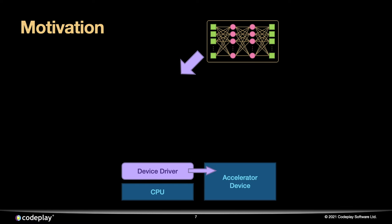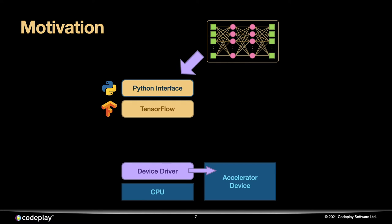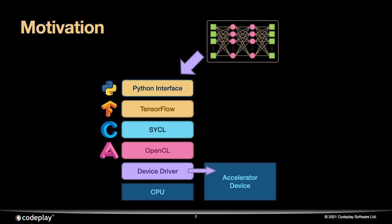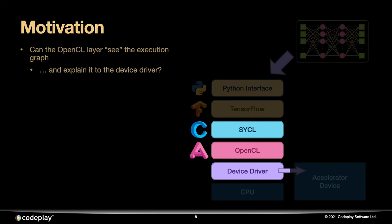One of the software stacks we work with at Codeplay looks like this: the machine learning model is implemented in Python, which provides an interface to TensorFlow. TensorFlow takes the model, converts it into a graph composed of TensorFlow operations, then uses the SYCL backend to convert those operations into C++. SYCL compiles the C++ operations to some intermediate representation, and all of that is passed down to OpenCL. OpenCL works with the device driver to dispatch the machine learning graph to the graph accelerator. So when we ask how we execute graphs with OpenCL, what we're really asking is: what does the OpenCL implementation see, what does it understand about the graph, and how can it communicate that to the device driver?